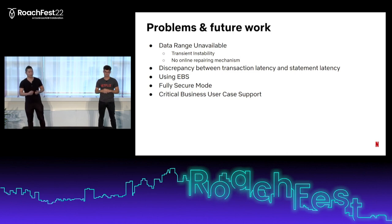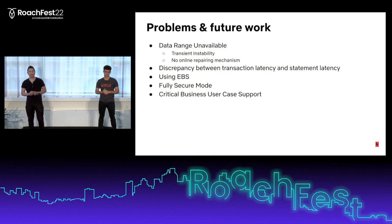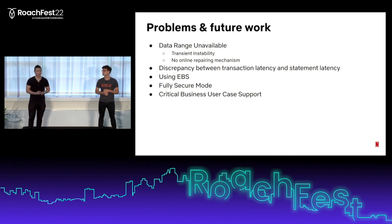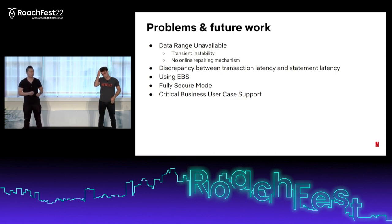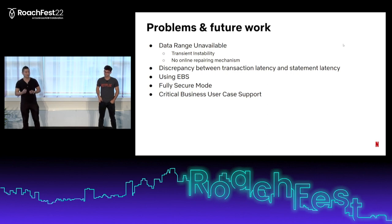The second problem is when there's non-transient data unavailability — the data is just unavailable. The current approach is to bring down the entire cluster, do offline repairing, and then bring it back. That fixes the problem, but the downtime may not be tolerable. We want to do preventative things upfront, like increasing the replication factor or using other mechanisms, while also improving our time-to-recovery metrics. We also see metric discrepancy issues — for example, transaction latency and statement latency discrepancies, which create confusion for some of our customers.